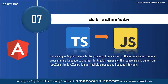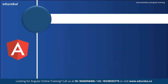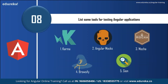What is transpiling in Angular? Transpiling refers to the process of conversion of source code from one programming language to another. In Angular, this conversion is generally done from TypeScript to JavaScript. It is implicit and happens internally. Next: list some tools for testing Angular applications. Karma, Angular Mocks, Mocha, Browserify, and Sinon are some of the tools used for testing Angular applications.